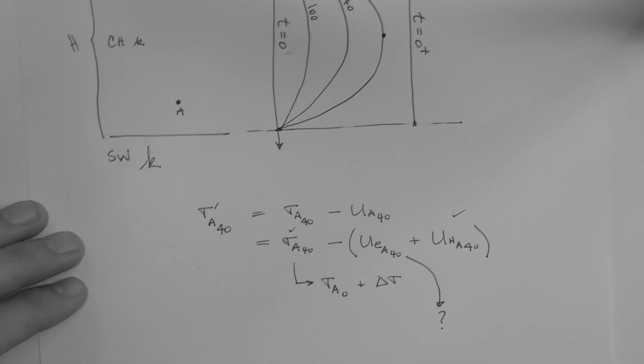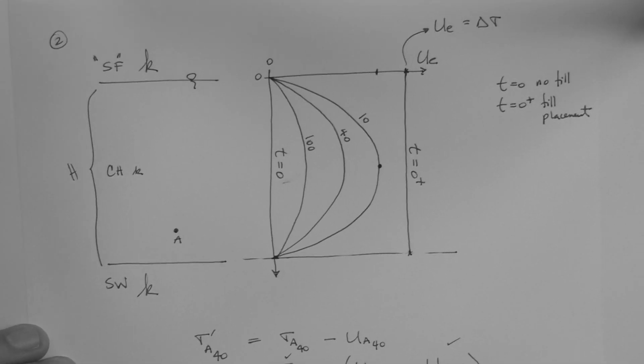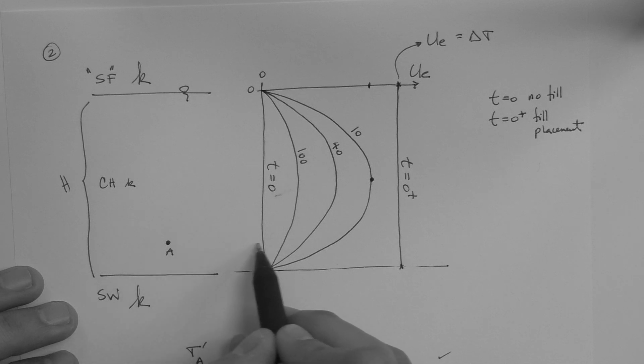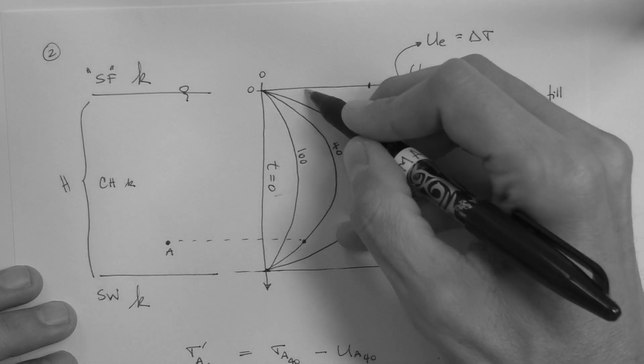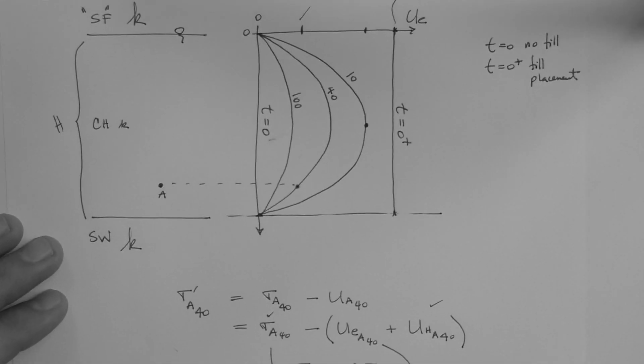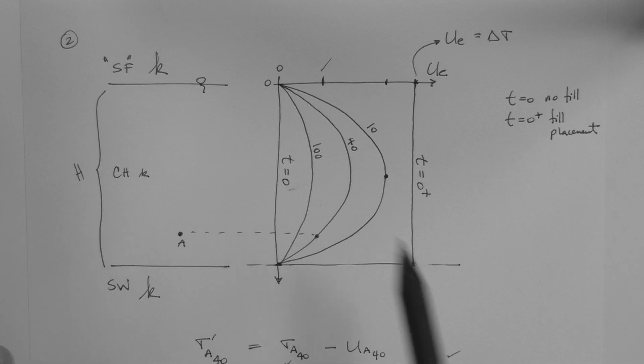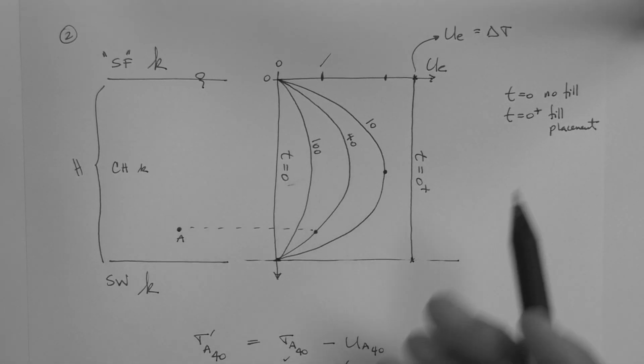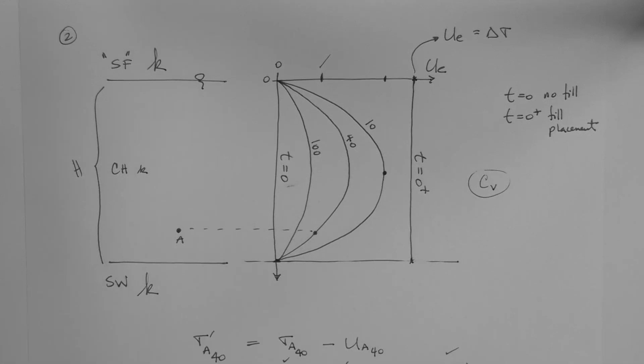To get this value, we would have to have, for our layer, a plot like this. Why? Because we could simply say that at point A at 40 days, this is the 40 day isochrone, the excess pore pressure is that value. Again, if we wanted this value, we would need a plot like this for our layer. And a plot like this, if we were to have it, then we would have it because we would create it based on our knowledge of the C sub V for the soil.